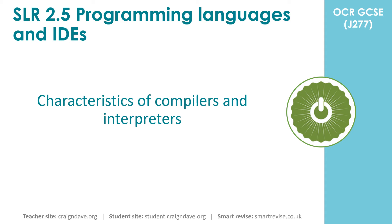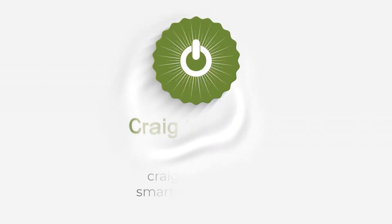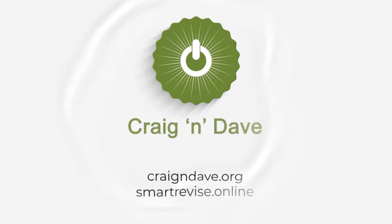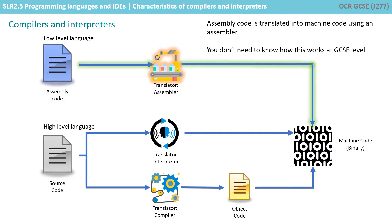In this video we're going to be looking at the characteristics of compilers and interpreters. Here's a quick recap of the diagram we were using in the previous video. If you've not watched that yet, go back and watch that video first.